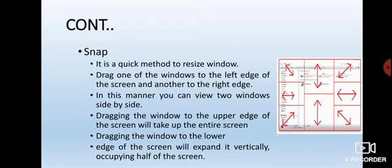Dragging the window to the upper edge of the screen will maximize it to take up the entire screen. If you drag the window upward, the entire screen will be maximized. Dragging the lower edge of the window to the lower edge of the screen will expand it vertically, occupying half of the screen — you can see only the vertical half part of the screen.